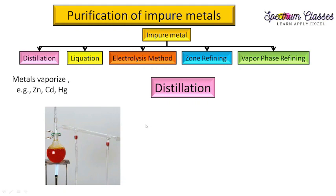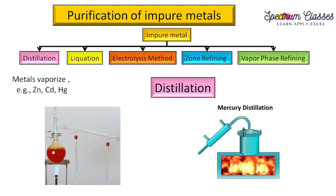In the same manner, the distillation assembly for metals works. The impure metal is placed in a container and heated. The metal with a low boiling point gets vaporized, the vapors pass through the condenser with cold water inlet and outlet, and the purified metal is collected on the other side. Through this method we can only purify metals that can be vaporized, like zinc, cadmium, and mercury.